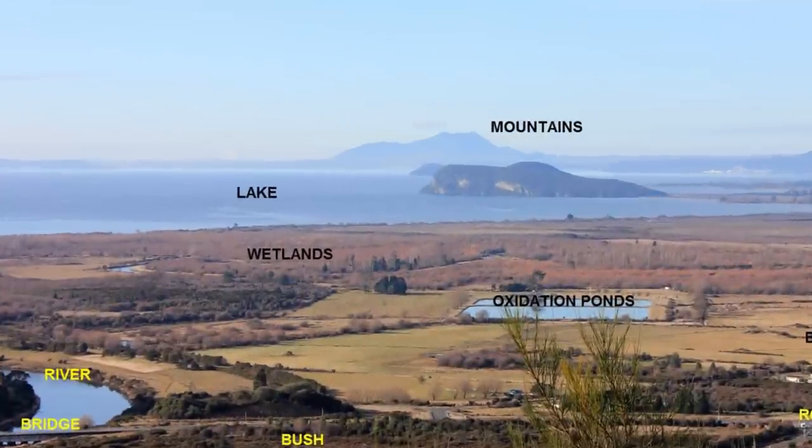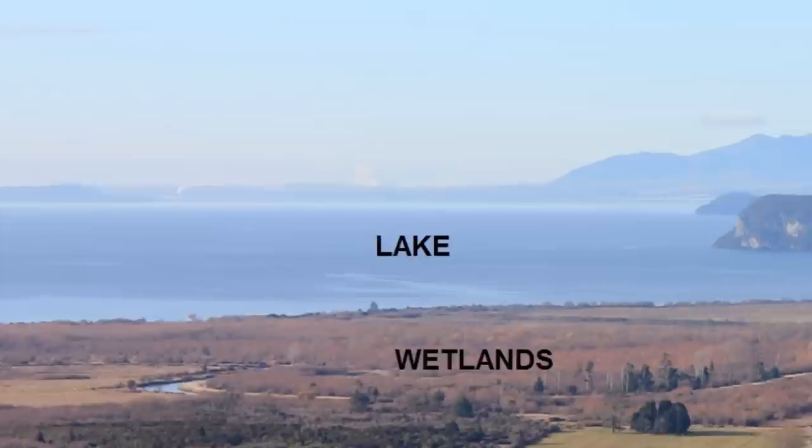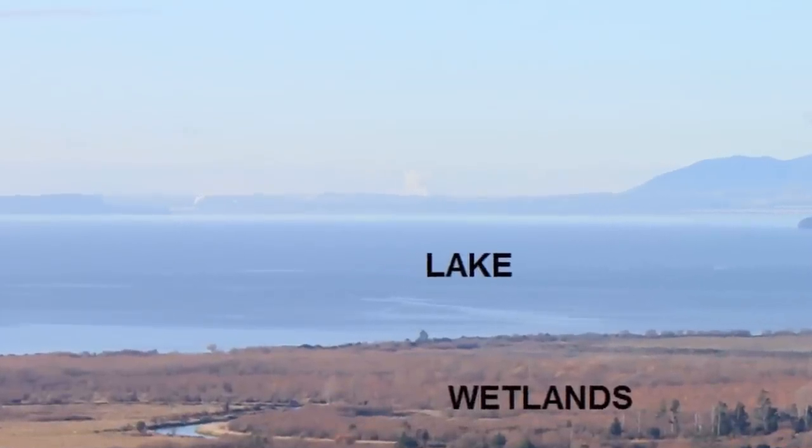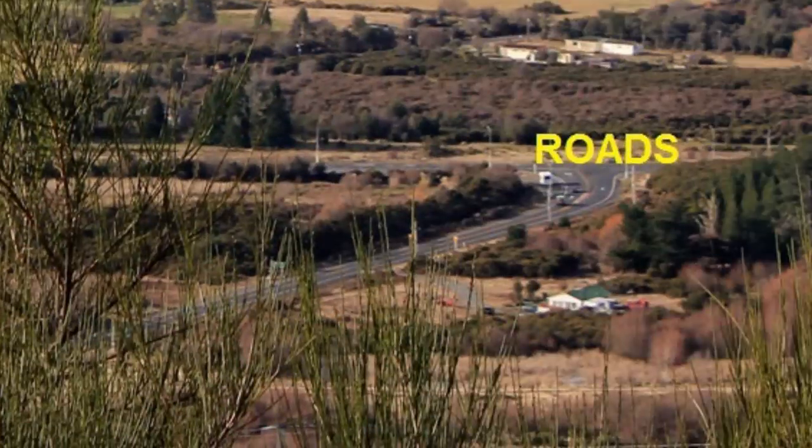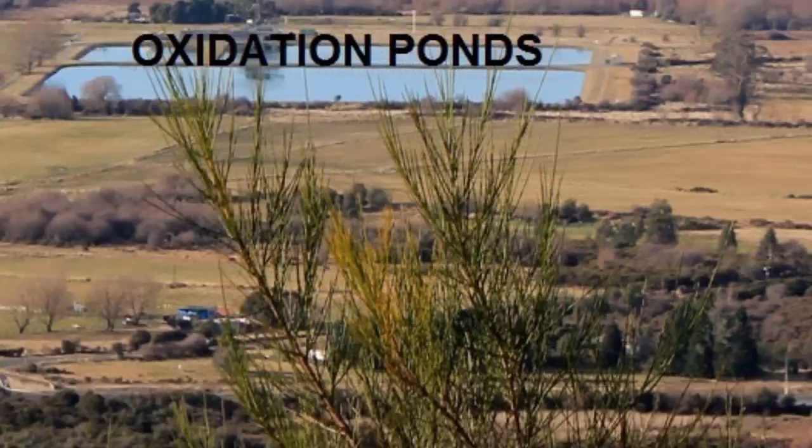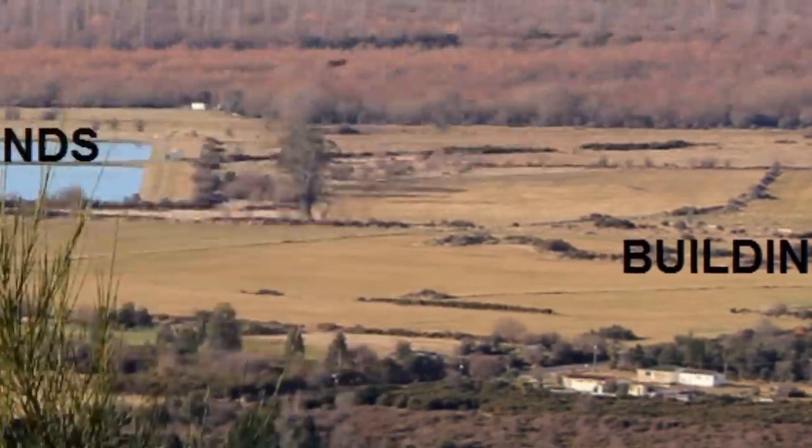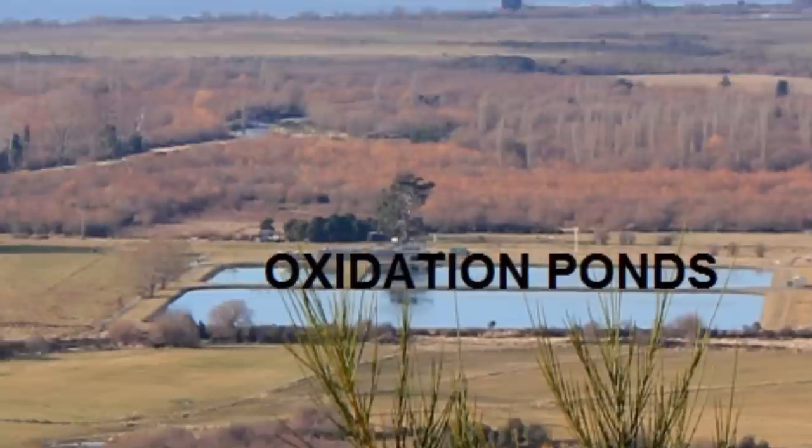Now I want to select the main cultural and natural features that are shown in the photograph. I will put them in my key and include the lake, native bush, roads, a bridge, the river, buildings, wetlands, oxidation ponds, and some of the mountains in the horizon.